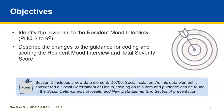Section D includes a new data element, D0700 Social Isolation. As this data element is considered a social determinant of health, training on this item and guidance can be found in the Social Determinants of Health and New Data Elements in Section A presentation.